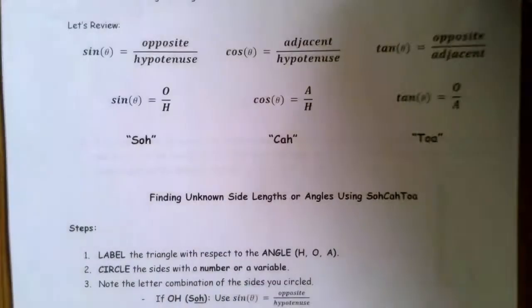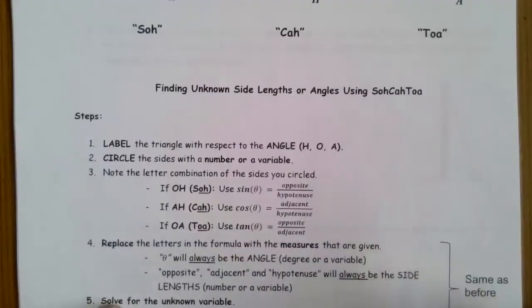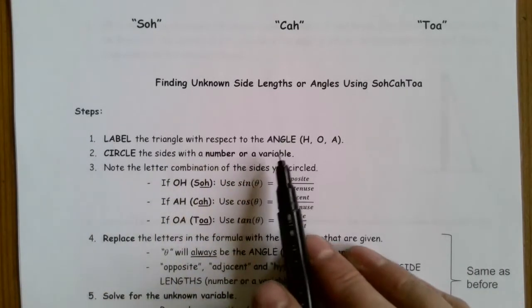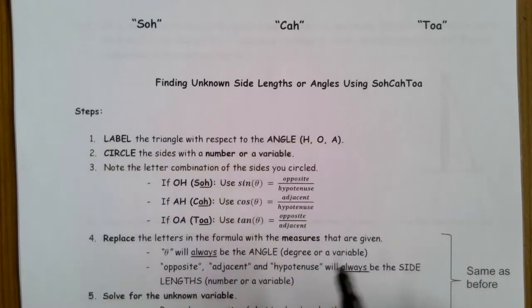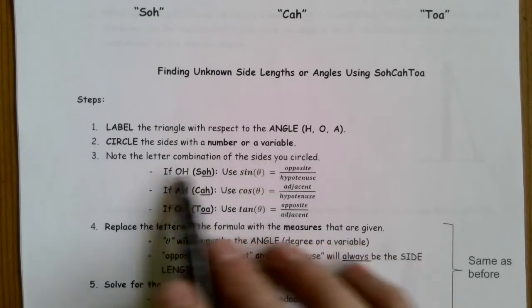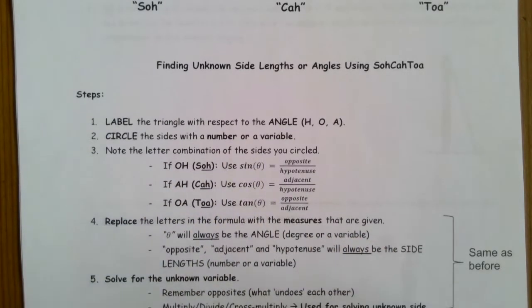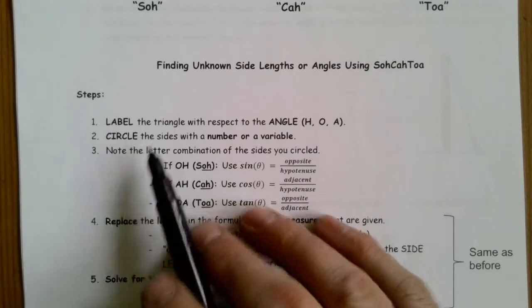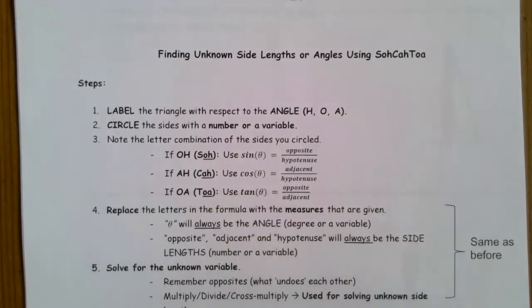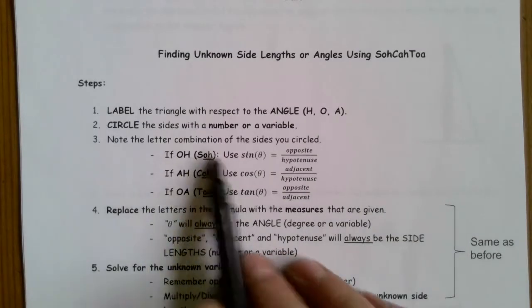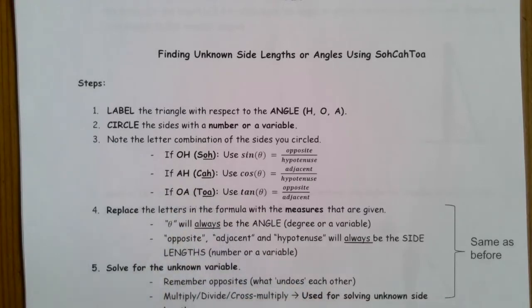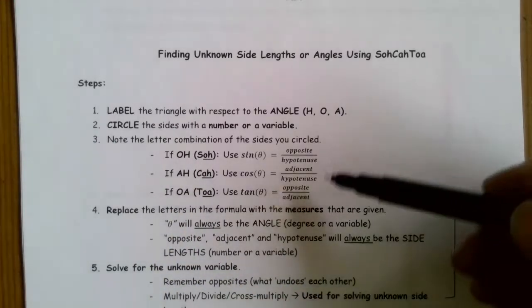How do we use these things to find unknown side lengths and angles? First, just like we've done in the previous lessons, we're going to label the triangles with respect to the angle — identifying the hypotenuse, the opposite, and the adjacent. Then we're going to circle the sides with a number or a variable, and note the letter combinations, drawing our attention to the information given based on the angle being indicated.